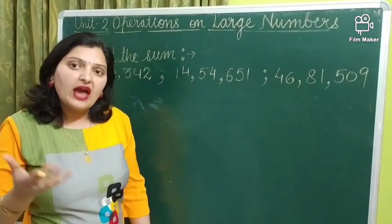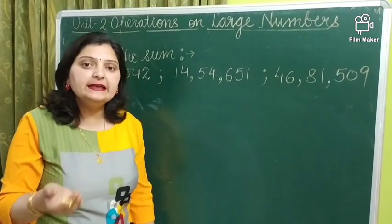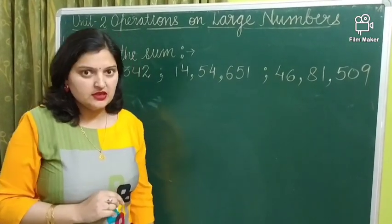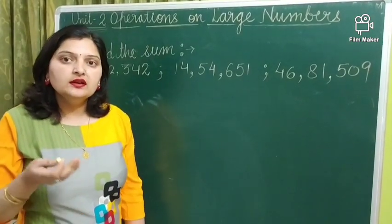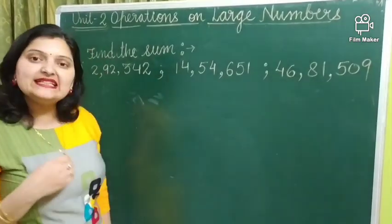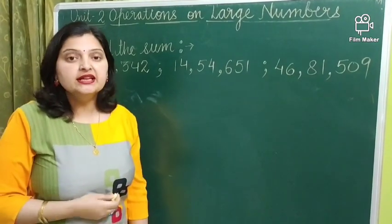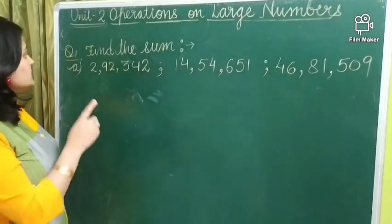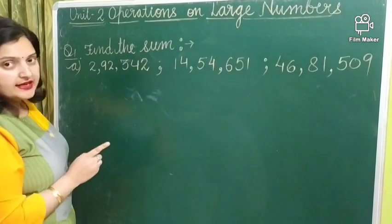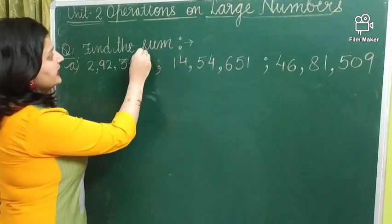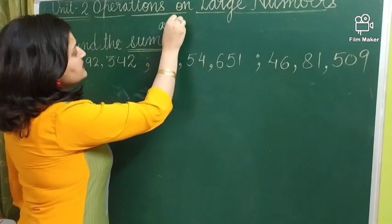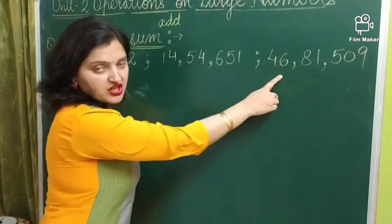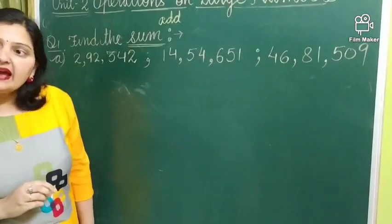Operations means we have to add, subtract, multiply or divide those numbers. So, here is our chapter, operations on large numbers. Let us start our very first operation that is addition. Our question number 1 is find the sum. As I have told you that sum means addition. It means you have given 3 large numbers which you have to add.